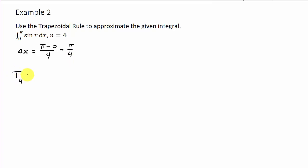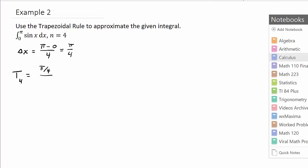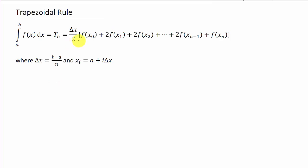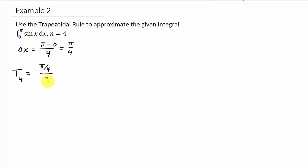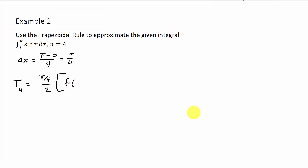Alright, so we have t₄, n is 4, that's going to be delta x over 2 times f of, now what's the first number that we're going to plug in? Well, it's that lower limit here, 0. So, that's f(0) plus, and then remember it's 2 times f of, now remember delta x is π over 4, so we're going to add π over 4 each time. So, that's π over 4 plus 2 times f of, and then I'm going to add π over 4 to this. That's π over 4 plus π over 4 is 2π over 4, so that's π over 2.